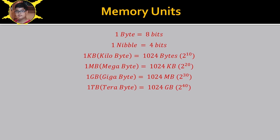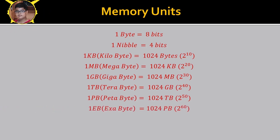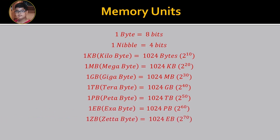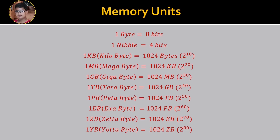One gigabyte is equal to 1024 megabytes. One TB or terabyte is equal to 1024 gigabytes, which is 2 raised to the power 40. One petabyte is equal to 1024 TB. One exabyte is equal to 1024 petabytes, which is 2 raised to the power 60. One zettabyte is equal to 1024 exabytes. One yottabyte is equal to 1024 zettabytes, which is 2 raised to the power 80.